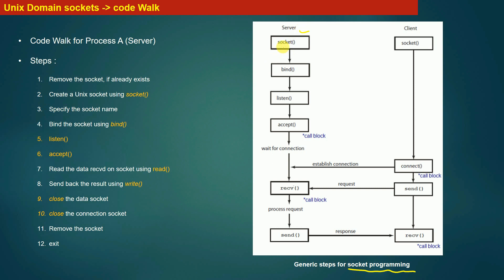The first step the server process needs to do is to create a socket, also called the master socket file descriptor or connection socket. The next step is the bind system call, followed by listen. Then the server calls accept in order to wait for a connection from a new client. Once the client connection request arrives using the connect system call, the server process is unblocked from accept and the server and client processes engage in communication, exchanging data.